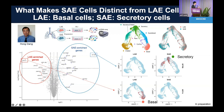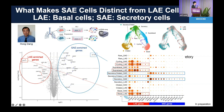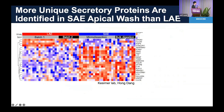Looking more globally, large airway-enriched genes identified by bulk RNA sequencing are actually enriched in the basal cell population. In contrast, small airway marker genes identified by bulk RNA sequencing are really consistently enriched in the secretory cells. These data suggest that large airway characteristics are based on the basal cell population, whereas small airway identity or characteristics are represented by secretory cells.